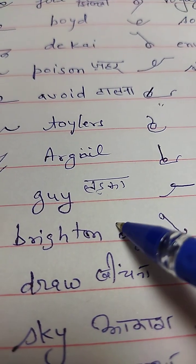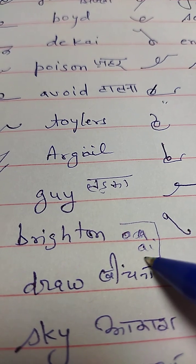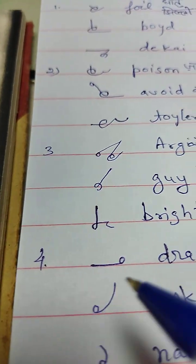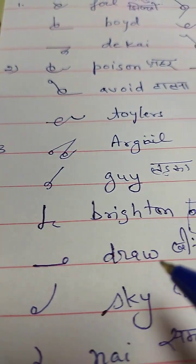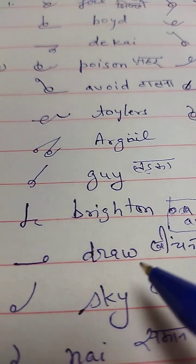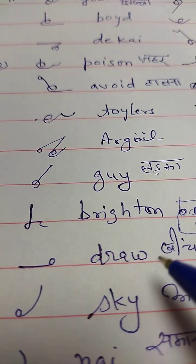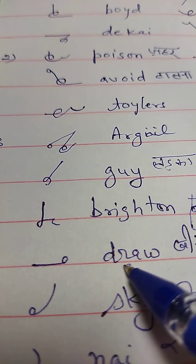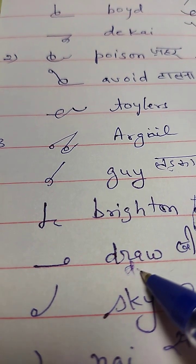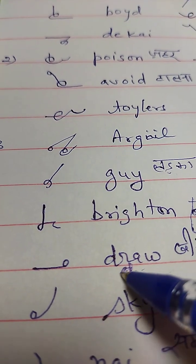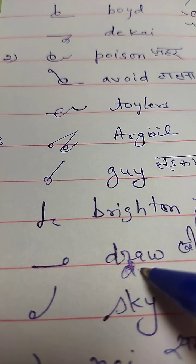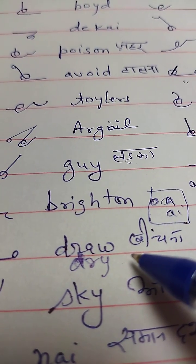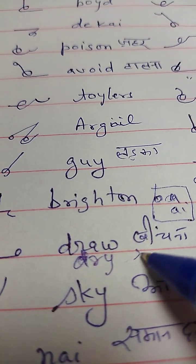Fourth. Draw or Dry. Dry — D-Y. Dry — Gila.